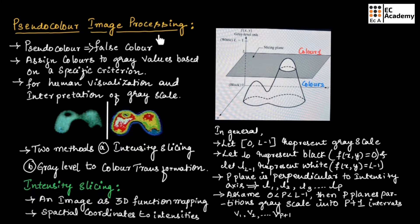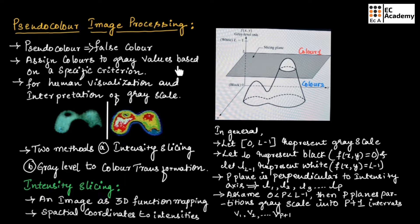In image processing, there are two types: full color image processing and pseudocolor image processing. Pseudocolor is nothing but false color — we are assigning colors to gray values based on some specific criteria. We are doing this for human visualization and interpretation of grayscale images.